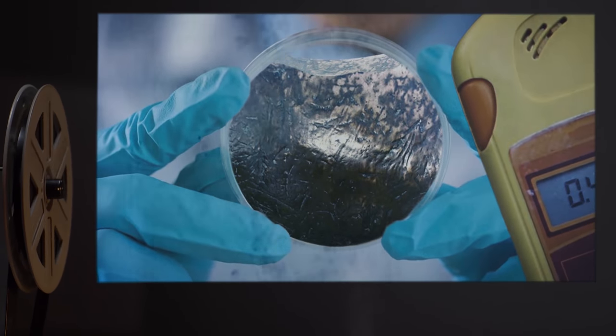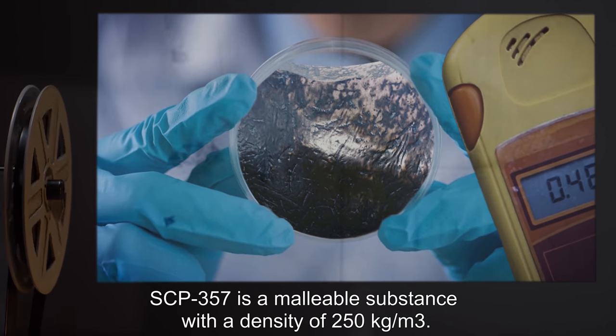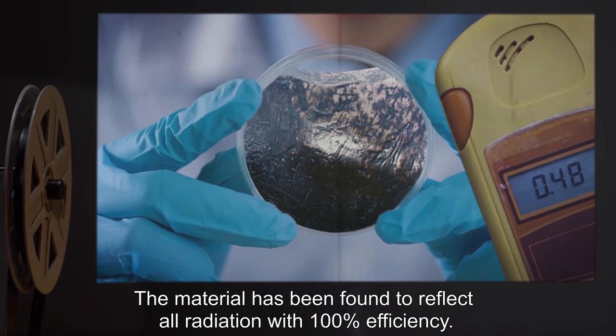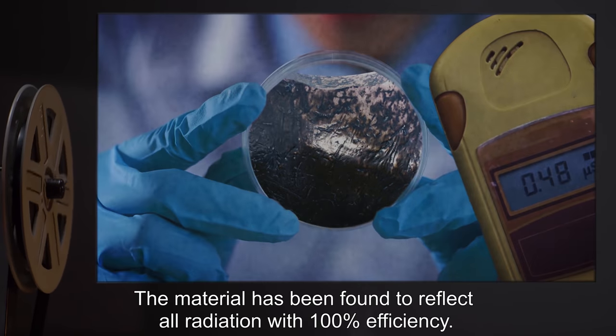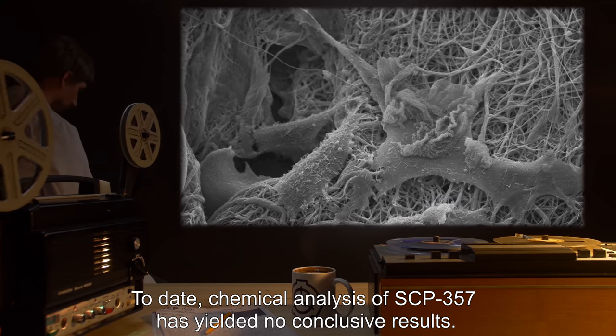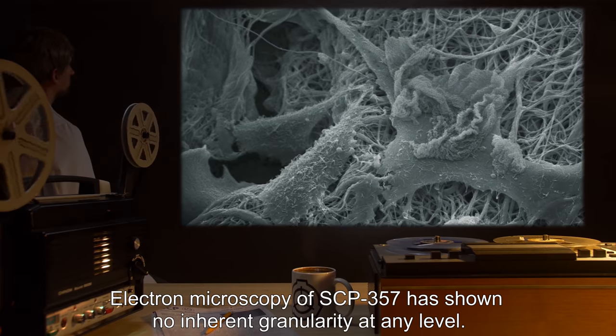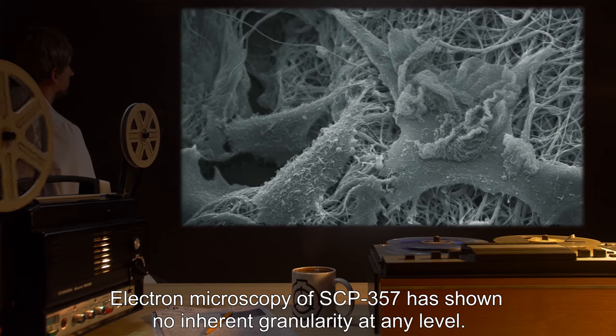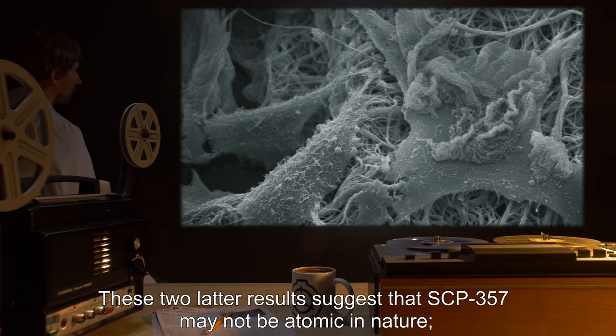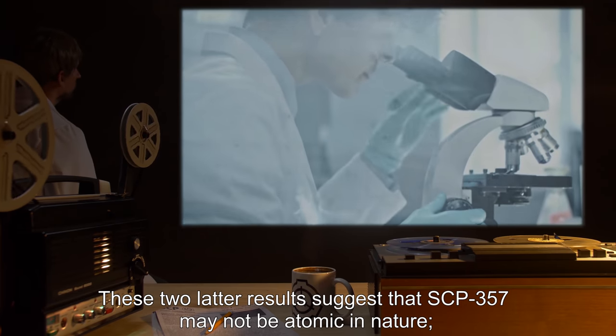Description: SCP-357 is a malleable substance with a density of 250 kg per cubic meter. The material has been found to reflect all radiation with 100% efficiency. To date, chemical analysis of SCP-357 has yielded no conclusive results. Electron microscopy has shown no inherent granularity at any level. These results suggest that SCP-357 may not be atomic in nature.